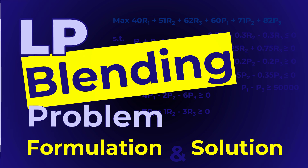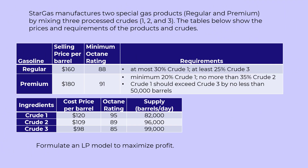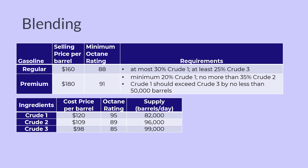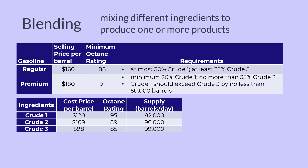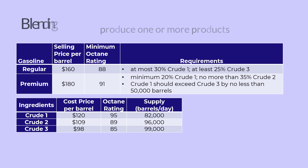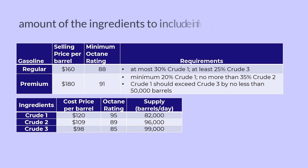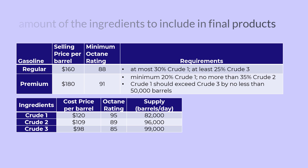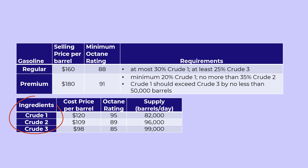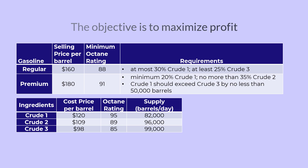In this video, I will be formulating and solving this LP problem. Blending problems in linear programming involve mixing different ingredients to produce one or more products. The goal typically is to determine the amount of ingredients or raw materials to include in the final products, with the objective of either maximizing profit or minimizing cost. In this hypothetical scenario, the ingredients are three processed crudes and the products are two gasoline types, regular and premium. The objective is to maximize profit.